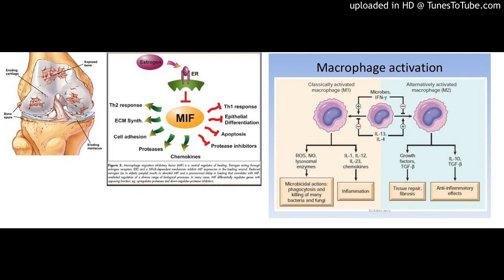Abstract. Introduction: Macrophage Migration Inhibitory Factor (MIF) is a pleiotropic pro-inflammatory mediator that is involved in the progression of rheumatoid arthritis (RA). Previously, we demonstrated a small molecule compound 3-bifenyl-4-ulcarbanyl carbamothiol amino benzoic acid, Z590, could inhibit MIF activity with docking-based virtual screening and experimental evaluation.